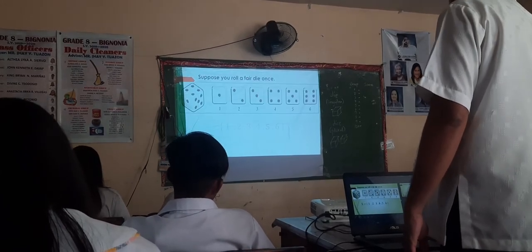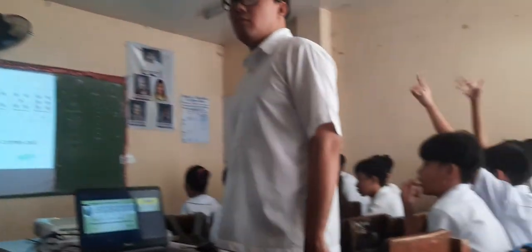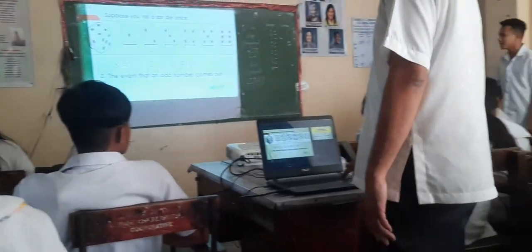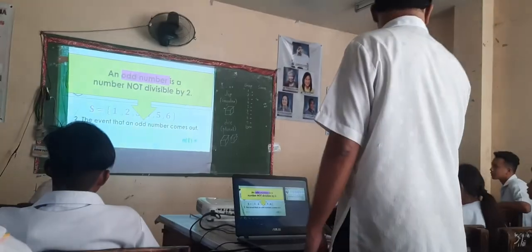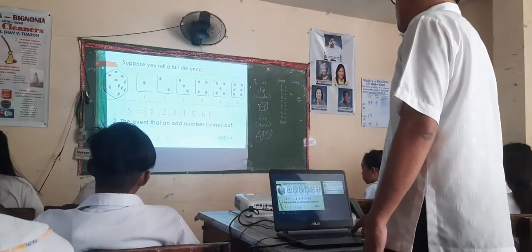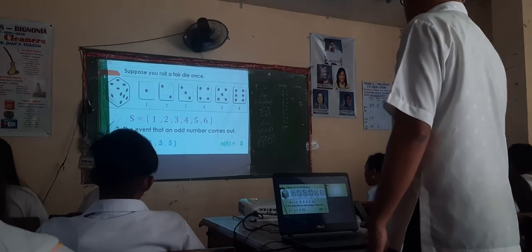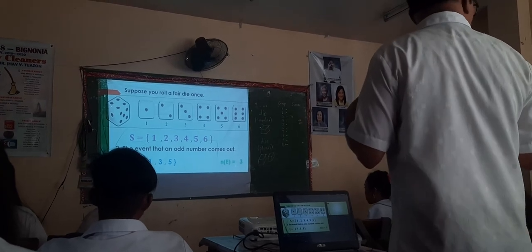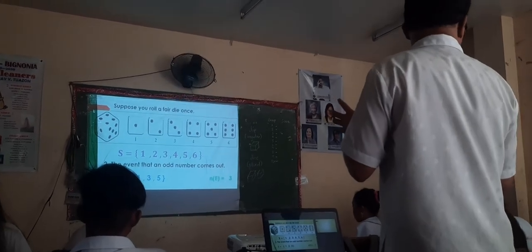Number two: the event that an odd number comes out. An odd number is a number not divisible by 2. E is the set containing 1, 3, 5. What is N(E)? N(E) is 3. We need this because we are preparing ourselves for tomorrow's topic, which is about probability. You need to know how to list the sample space and the event.